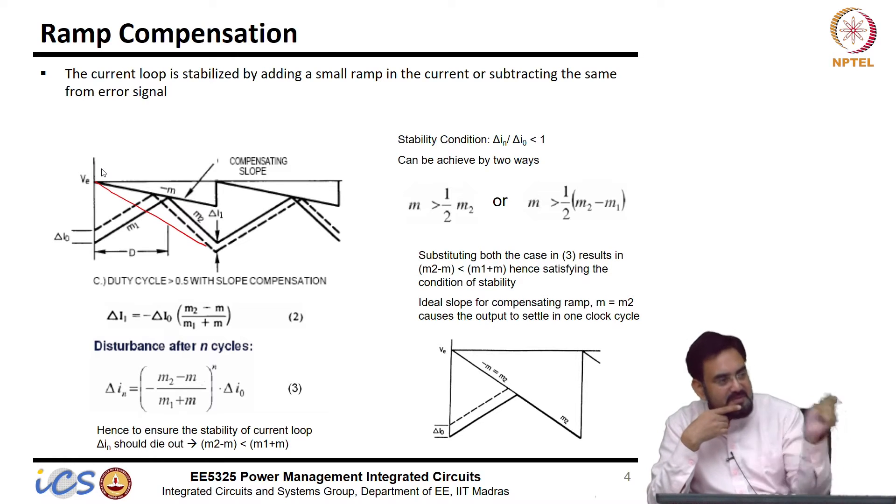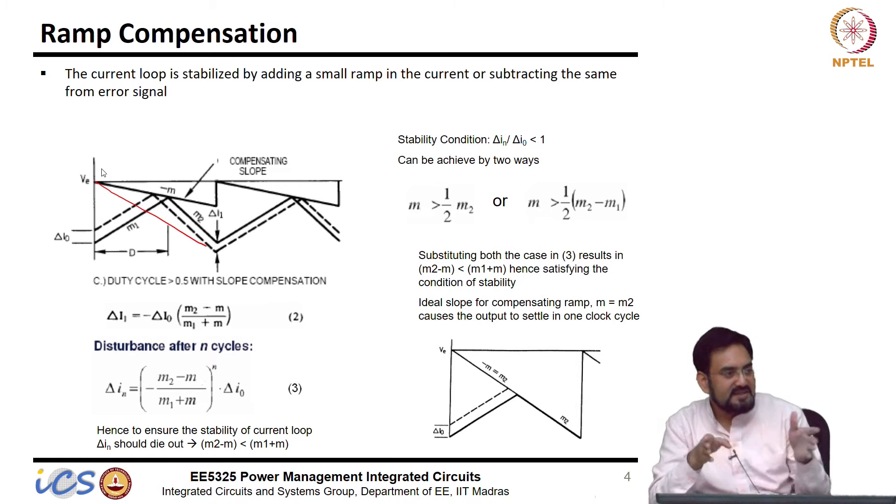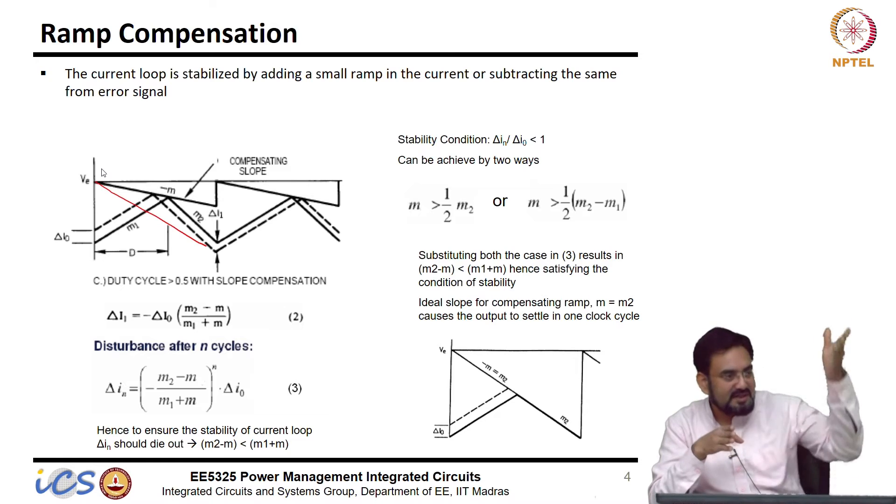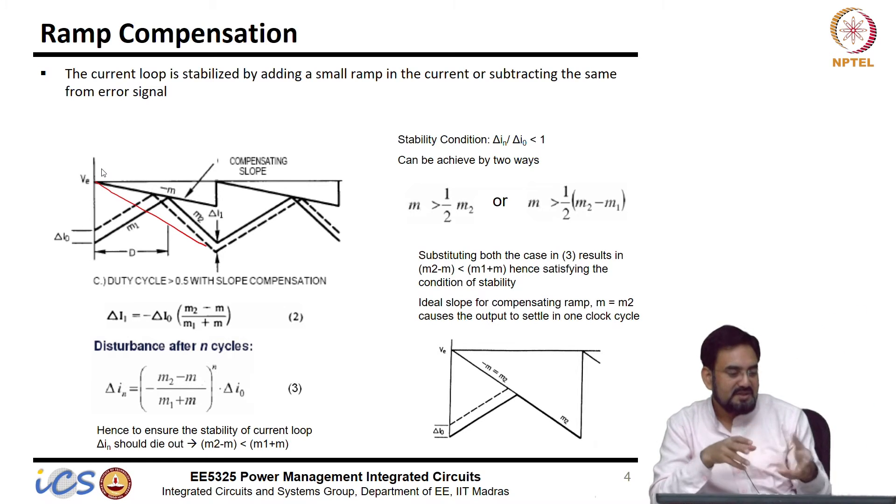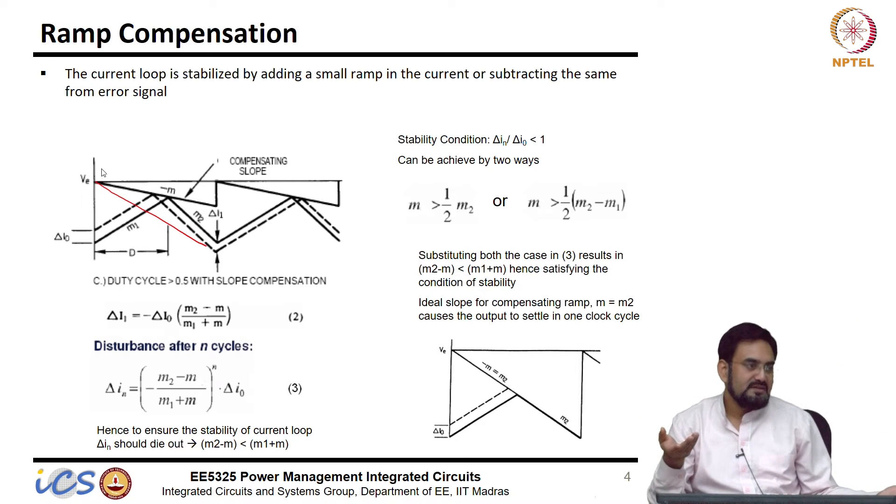Now this ramp is basically adjusting the duty cycle, this external ramp rather than the peak inductor current, because this is much stronger compared to the sensed current. So, your sensed current will die out within that.